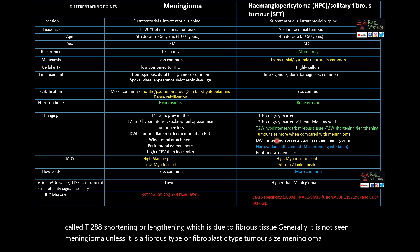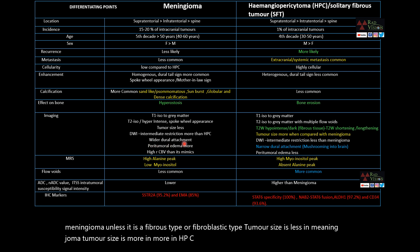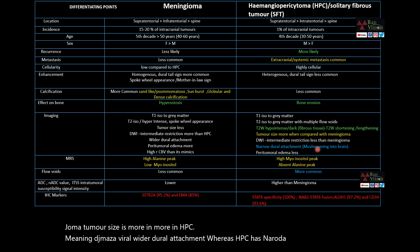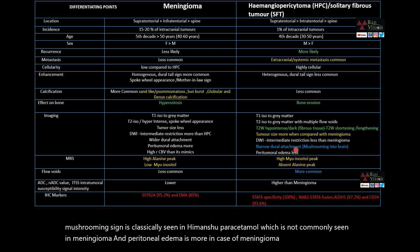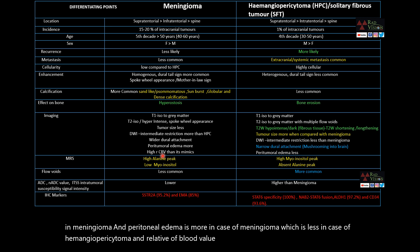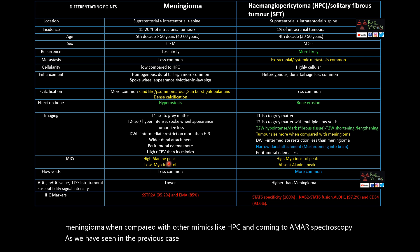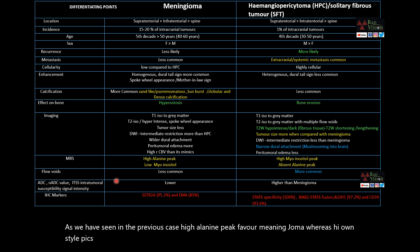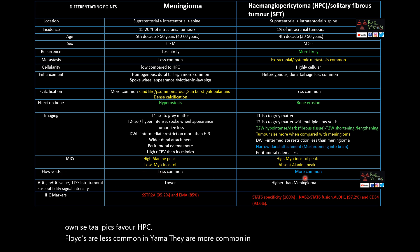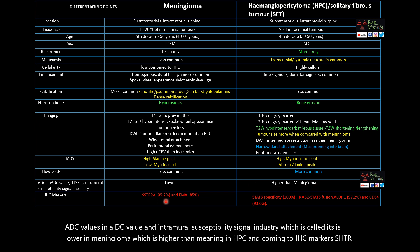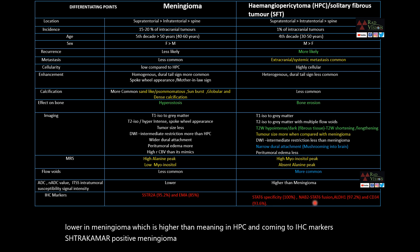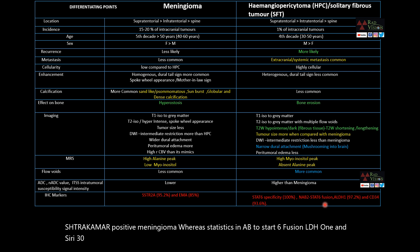Tumor size tends to be larger in HPC. Meningiomas have a wider dural attachment, whereas HPC has a narrow dural attachment. The mushrooming sign is classically seen in hemangiopericytoma. Peritumoral edema is more pronounced in meningioma and less in HPC. Relative cerebral blood volume on perfusion is high for meningioma compared to HPC. High alanine peaks favor meningioma on MR spectroscopy; high myo-inositol peaks favor HPC. Flow voids are more common in HPC. ITSS (intratumoral susceptibility signal intensity) is higher in HPC. IHC: SSTR2A and EMA are positive in meningioma, whereas STAT6, NAB2-STAT6 fusion, ALDH1, and CD34 are positive in HPC/SFT.